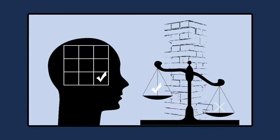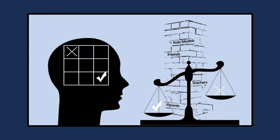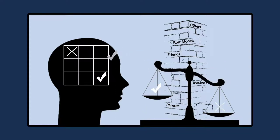Our upbringing may have provided certain values. Our parents, teachers, friends, role models, and others instilled values in us. We've likely formed other values because of our life experiences.